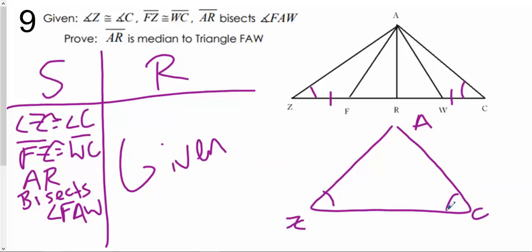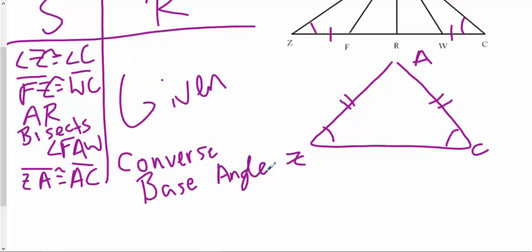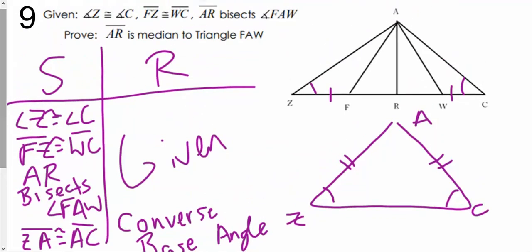Well, it's going to be an isosceles triangle. So if it's an isosceles triangle, I know that AZ has to be congruent to AC. So we can say that segment ZA has to be congruent to segment AC by the converse of the base angle theorem. I'm going to say converse of base angle.